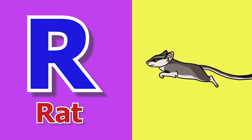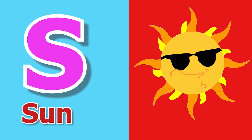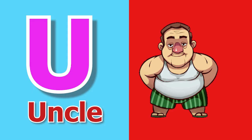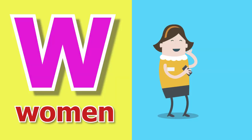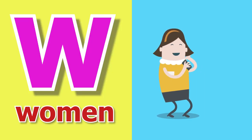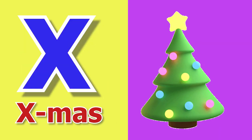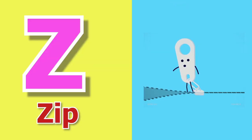R for Rat, S for Sun, T for Tree, U for Uncle, V for Wen, W for Woman, X for Xmas, Y for Yo-Yo, Z for Zip.